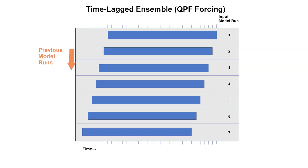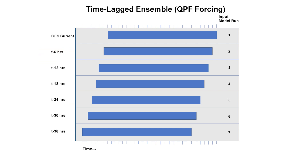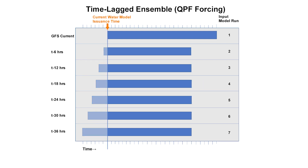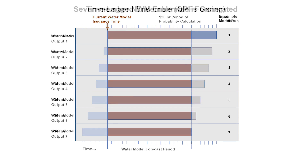Quantitative precipitation forecasts, QPF, from the current forecast and six previous runs of the Global Forecast System Model, or GFS, are used to run the National Water Model Medium-range Forecast. Only QPF beginning with the current water model issuance time is used for all seven inputs, creating a time-lagged ensemble.